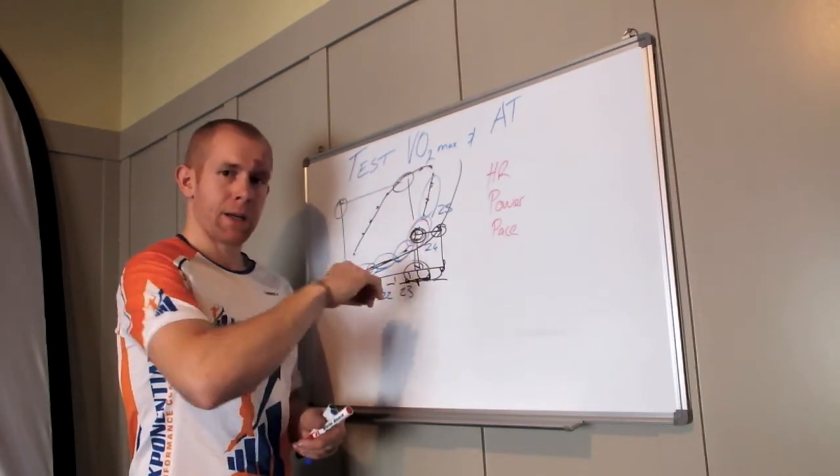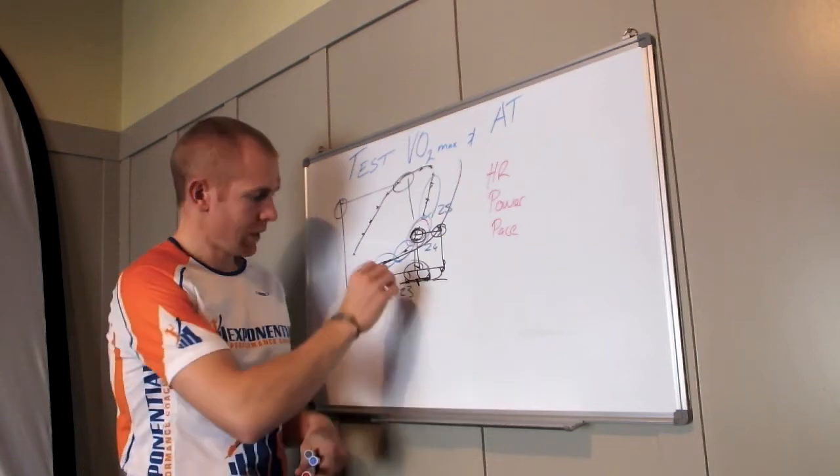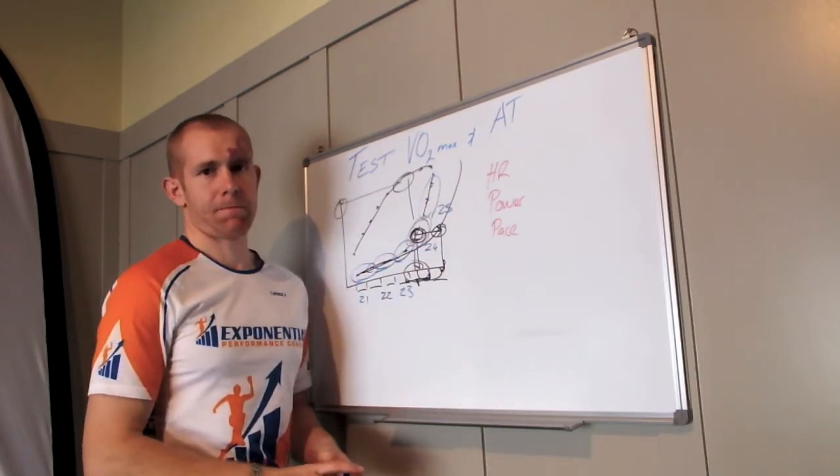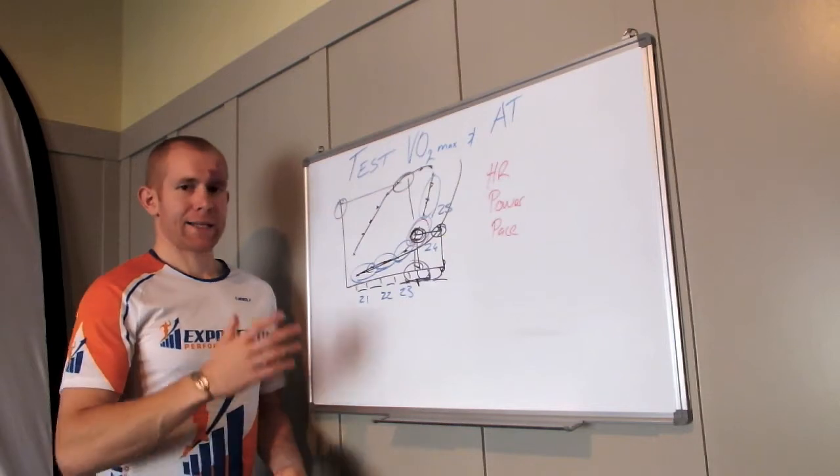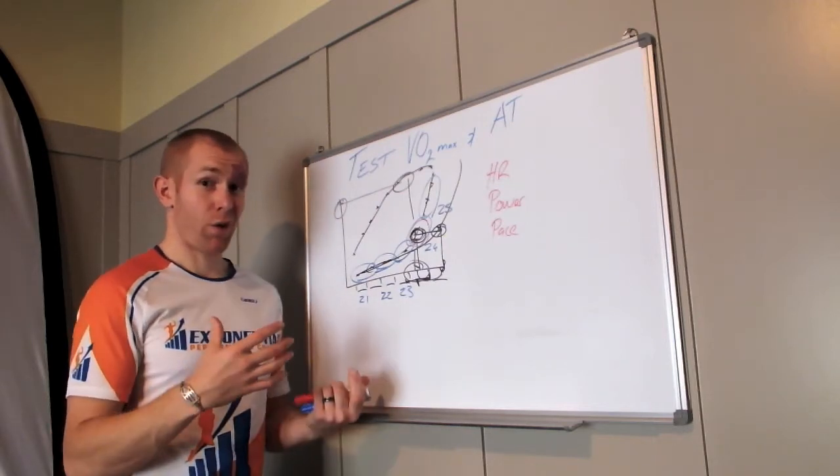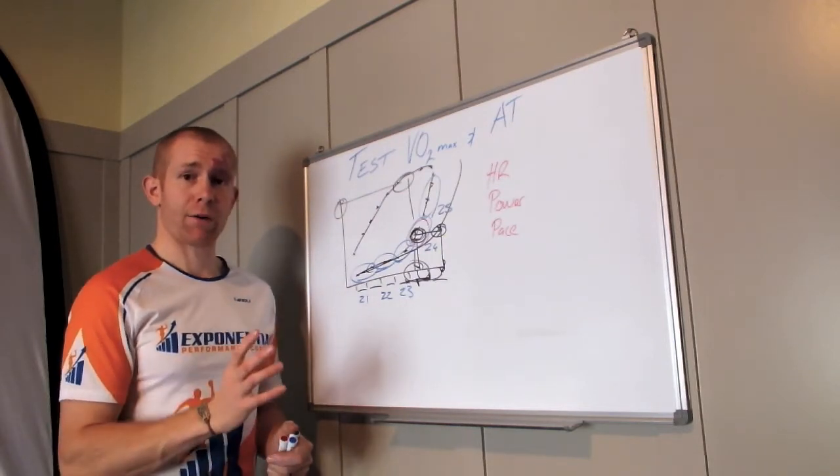You then take that number, put it into those equations, and you'll get your training zones out of it. So there you have it—a little bit about how to test VO2 max, not that important, but more importantly anaerobic threshold.